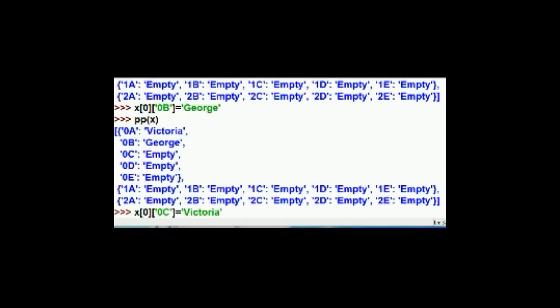Something's wrong with the seat. So Victoria decides to move to 0C. So we key in x[0] and then the key value 0C. That's equal to Victoria now. So the 0C key of the 0th row is now Victoria.